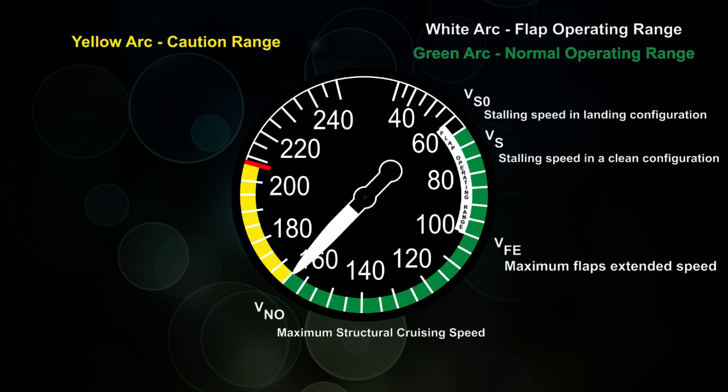The yellow arc is the caution arc, and you shouldn't be flying in the yellow unless, like I said once again, in smooth air and then only with caution. At the end of the yellow arc, we have a red line, and we call that VNE, or Never Exceed Speed. And that's self-explanatory. It's a speed that you should never exceed, or things start bending and falling apart, and that's usually a bad thing.